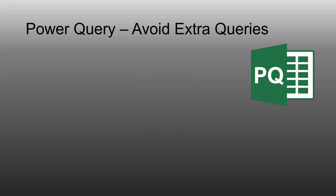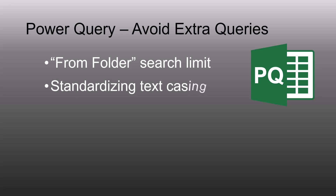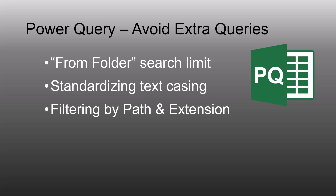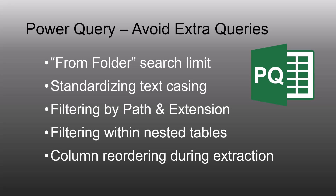Let's see how to avoid creating all these extra queries in Power Query. Along this journey, we're going to look at some really interesting optimization tricks to shorten the number of steps in your query and do things you can't do through the point-and-click interface. We'll look at how to control the search limit for the From Folder connector, why it's important to standardize your text casing, how to filter by path and by extension, how to filter within nested tables before data extraction, and how to perform column reordering and renaming during a table extraction.